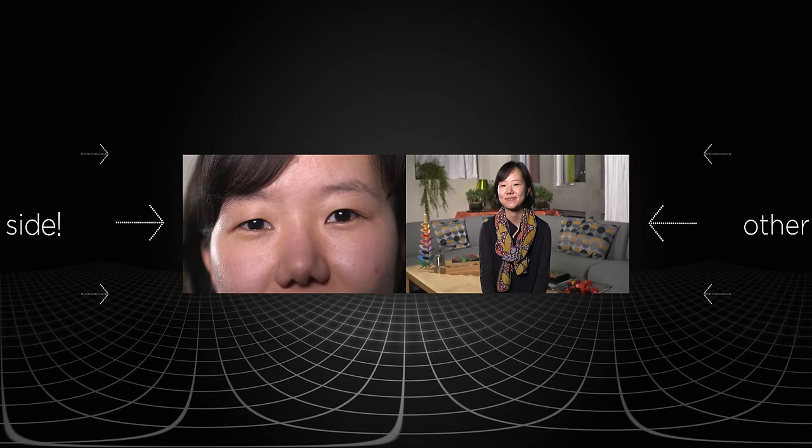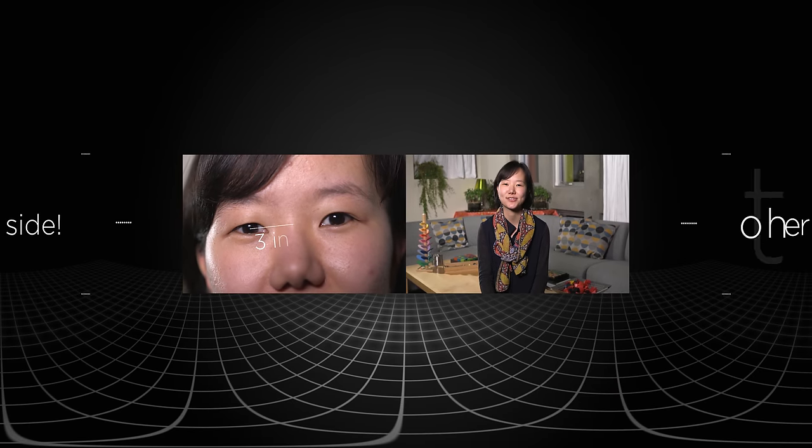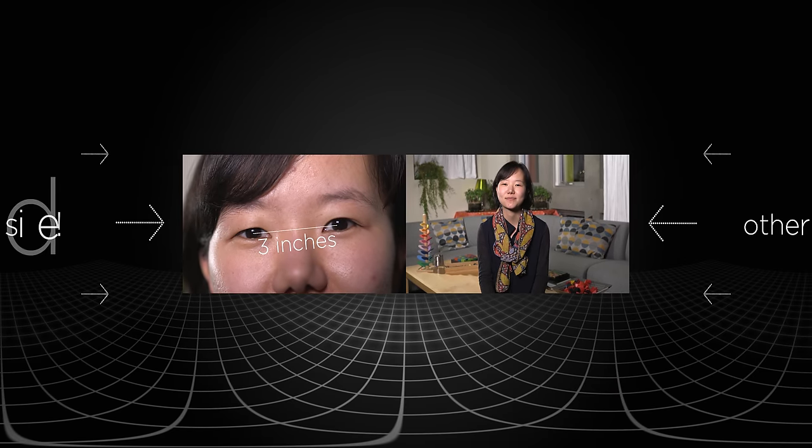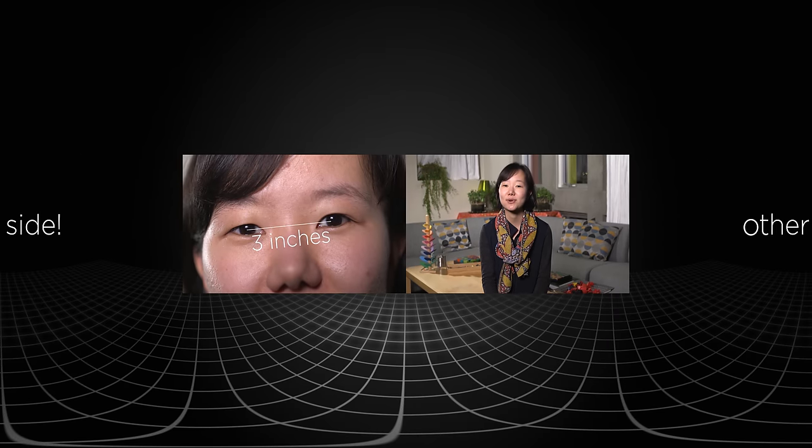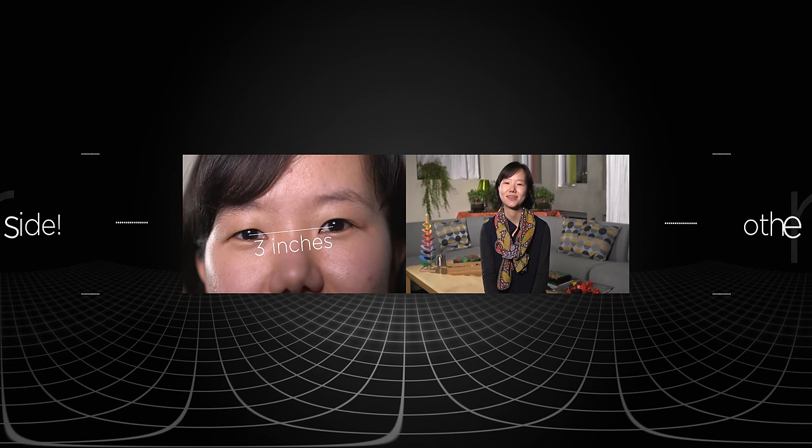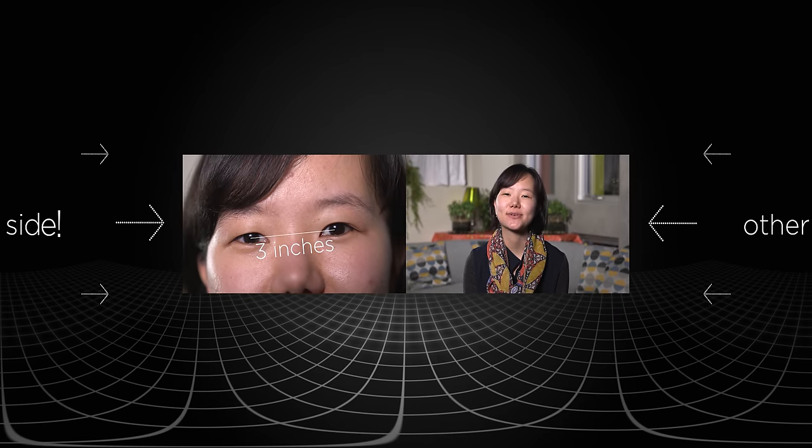3D vision is actually pretty simple. We have two eyes that are about 3 inches apart. And because of this separation, each of our eyes sees the world from a slightly different perspective. Our brain fuses those two views and creates a sense of depth.